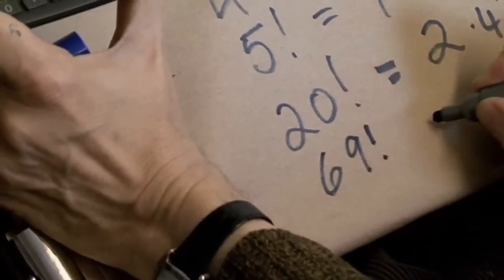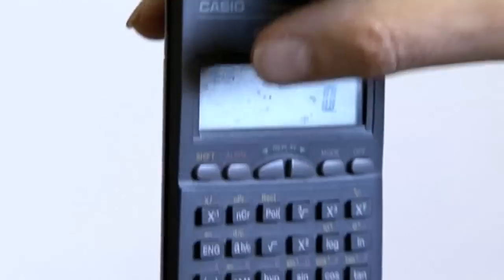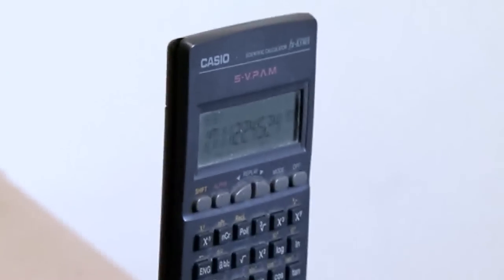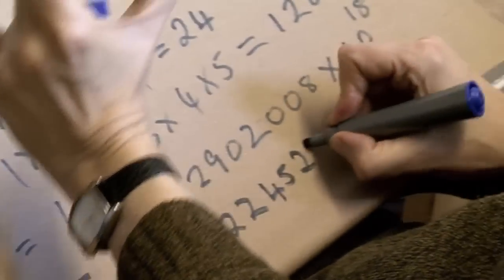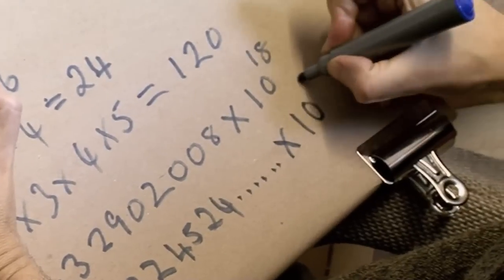Now 69, if we work out factorial 69, it turns out that this is the largest factorial number that I can calculate on my little pocket calculator here. 69, and then we do shift, and what do I get for that? I get 1.711224524, times 10 to the 98.